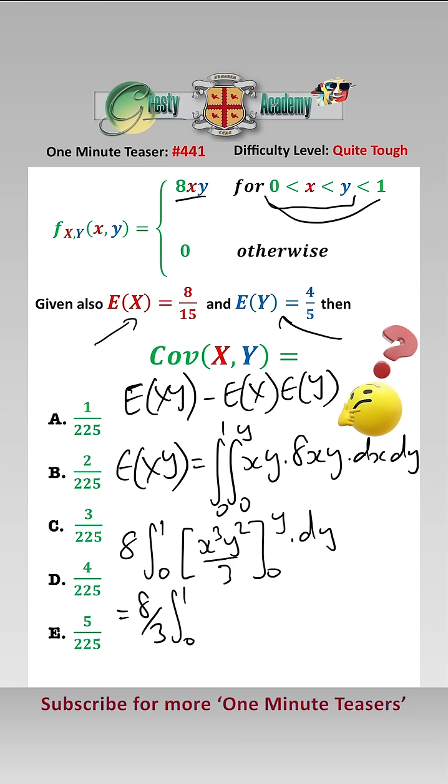the integral between 1 and 0 of Y to the 5 dy which equals 8 over 18 Y to the 6 between 1 and 0 which equals 4 ninths.